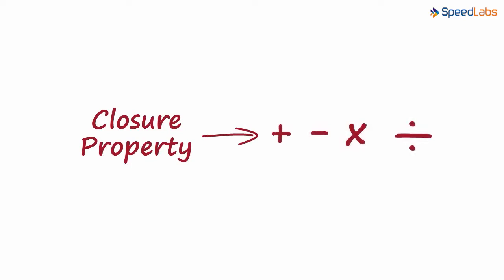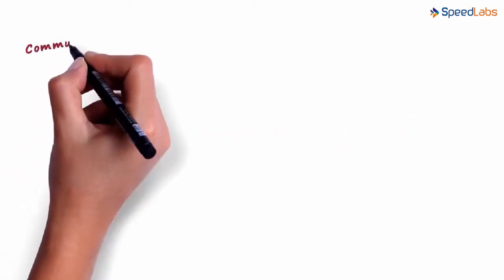In the previous video, we have seen that the closure property is satisfied for all the four operations on rational numbers. In this video, we will look at the commutative property.